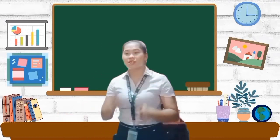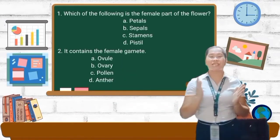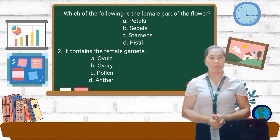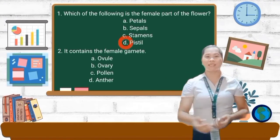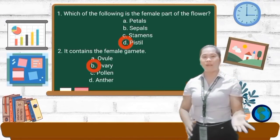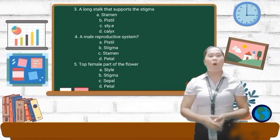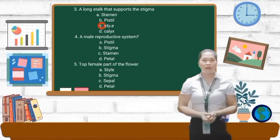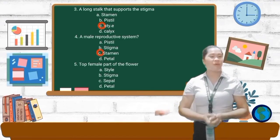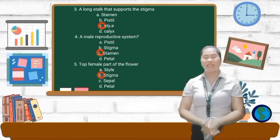Okay class, time's up. Please exchange your paper with your seatmate. So this time class, we will check your work. Who wants to read and answer question number one? Yes, Jenny — which of the following is the female part of the flower? Okay, very good: pistil. Number two, yes Mark — it contains the female gamete. Okay, very good: ovary. Number three, yes Bea — a long stalk that supports the stigma? Okay, very good: style. Number four — a female reproductive system? Yes, John Ray. Okay, very good: style. Number five — top female part of a flower? Yes, James. Okay, very good: stigma.